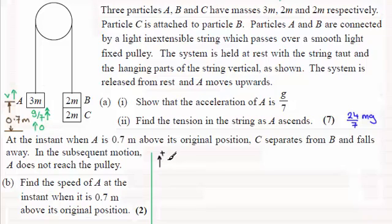So in that case I've got S the displacement, U initial velocity, V final velocity, A the acceleration, and T the time. And I know S the displacement as it goes from here to here, it's positive 0.7. U, the initial velocity, I know is 0, started from rest.